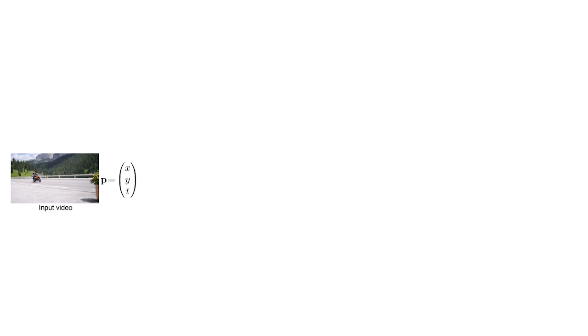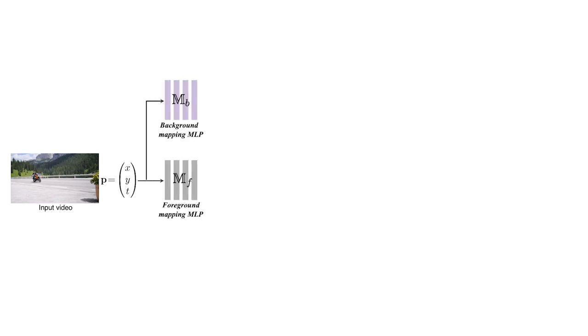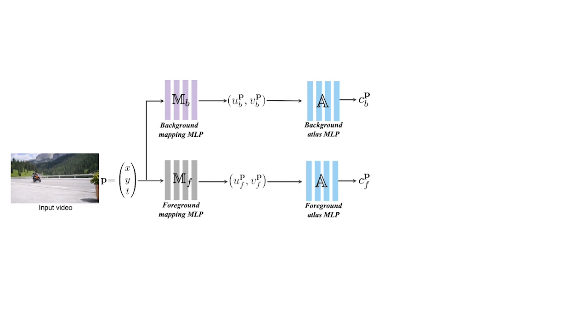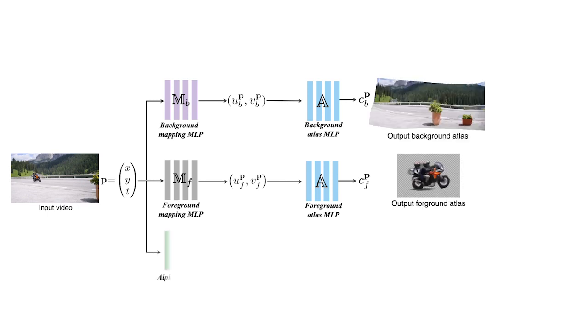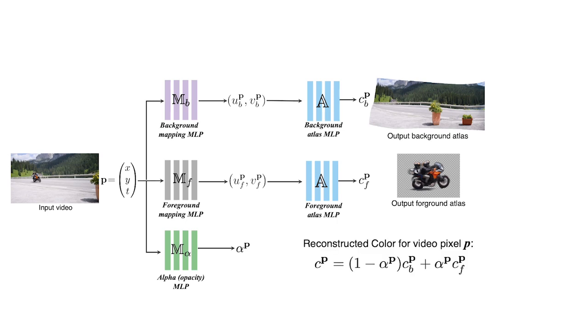Our approach works by computing functions that map from the input video coordinates (x, y, time) to UV coordinates of foreground and background atlases. We simultaneously estimate the RGB colors of the atlases themselves, as well as a per-pixel, per-layer alpha transparency value. We can then use these three things to render out a reconstructed video by compositing the layers together.